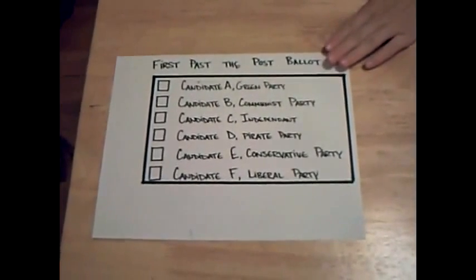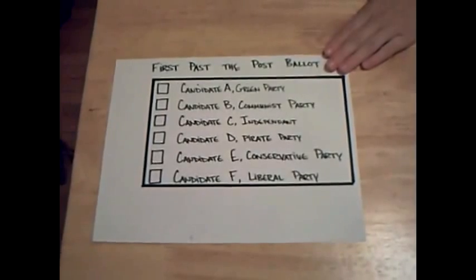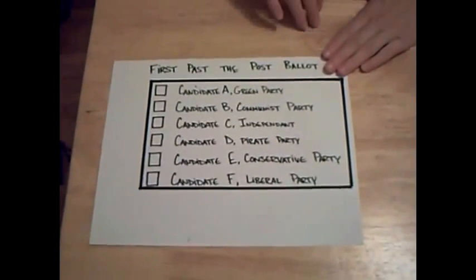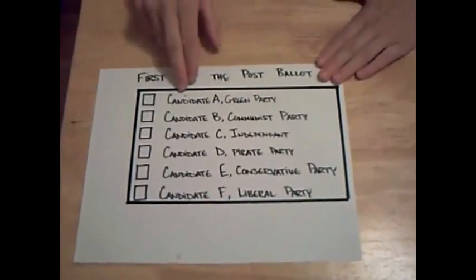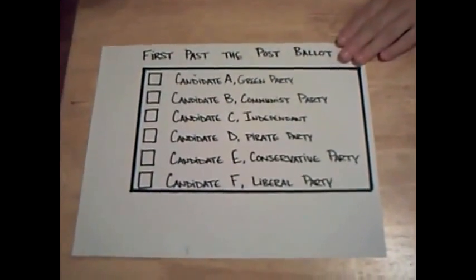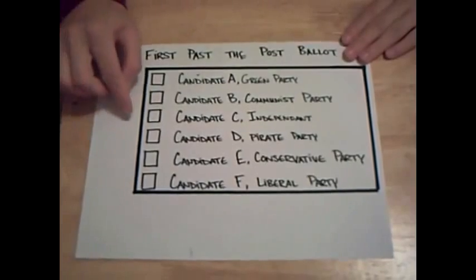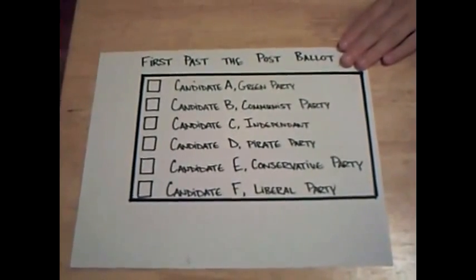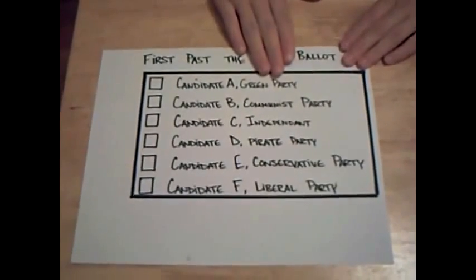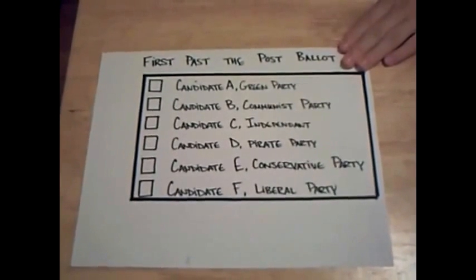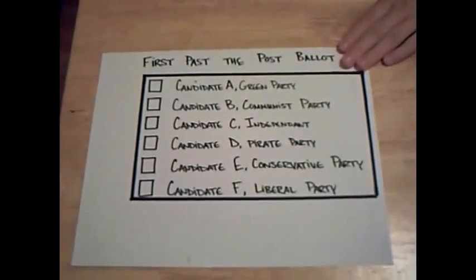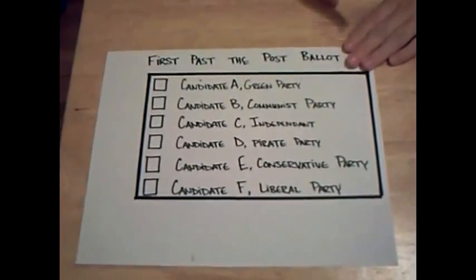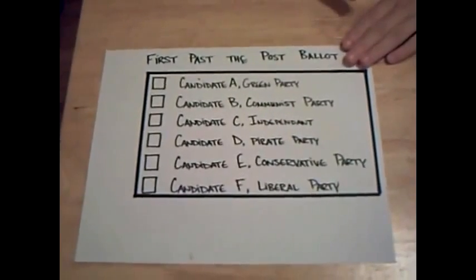So let's take a look at some sample ballots. Here we have a typical sample ballot from our current system, First Past the Post, and you'll see that every party which has chosen to run in this riding has selected one candidate to represent them in this riding. On election day, voters get to choose one party and thus one candidate, and the candidate with the most votes wins that riding. It's important to note that since only one party can win this riding, if you did not vote for the winning party, your vote does not affect the outcome of the election. So even if the party that you voted for got 40% of the popular vote, it means that you are not represented in Parliament.